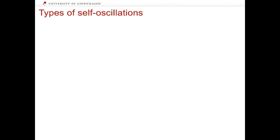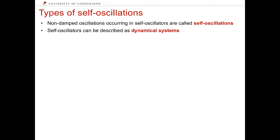To reiterate, non-damped oscillations occurring in self-oscillators are called self-oscillations. Self-oscillators can be described as dynamical systems. In the phase space, images of self-oscillations are non-fixed point attractors. These attractors can be classified based on the type of self-oscillations.